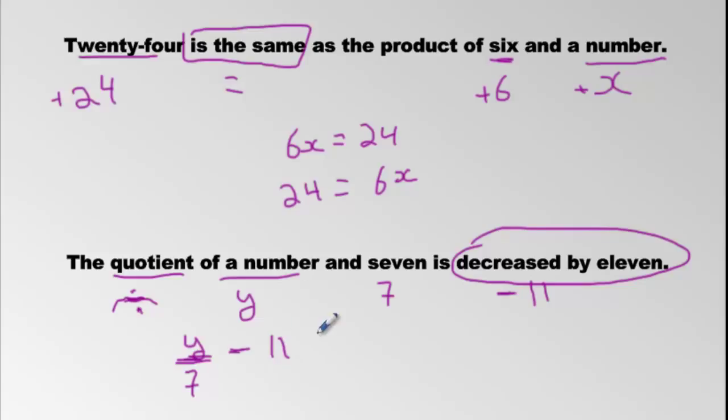Since there is no equal sign here, this is called an expression. Whereas this top one has an equal sign and an answer, so we call it an equation. And you're responsible for knowing the difference between those two.